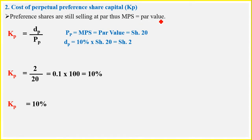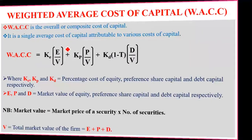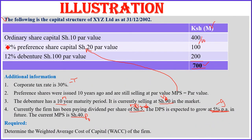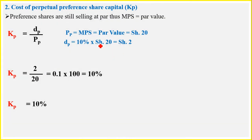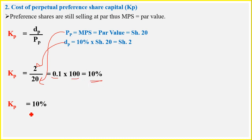For the cost of perpetual preference shares, the preference shares are still selling at par value, so Pp = 20 shillings. The dividend per preference share is 10% of 20 = 2 shillings. Therefore Kp = Dp / Pp = 2 / 20 = 0.1, multiplied by 100 gives 10%. The cost of preference shares is 10%.